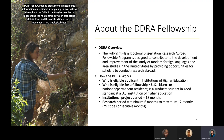Essentially, how the DDRA works: the eligible applicant is an institution of higher education. If you're a doctoral student, your institution of higher education is the eligible applicant, and you would be eligible for a fellowship. U.S. citizens or nationals, permanent residents, if you're a graduate student in good standing at a U.S. institution of higher education — institutions outside of the United States are not eligible applicants. The project period is 18 months, and the research period is a minimum of six months and a maximum of 12 consecutive months. You cannot go to the field for three months, come home for three months, and then go back for three months.